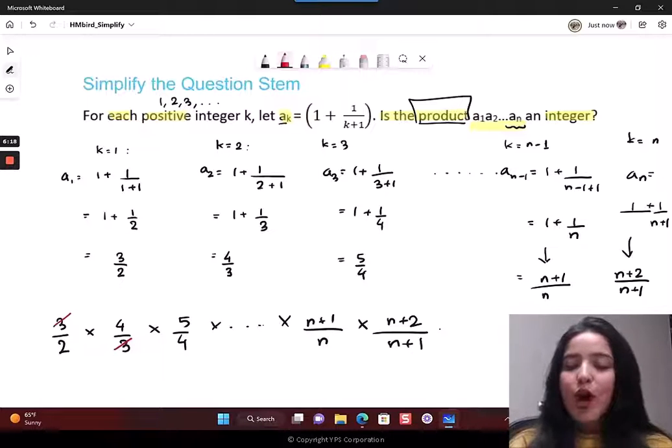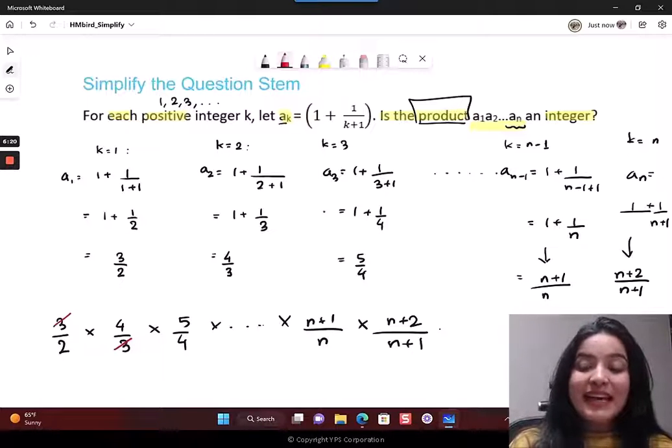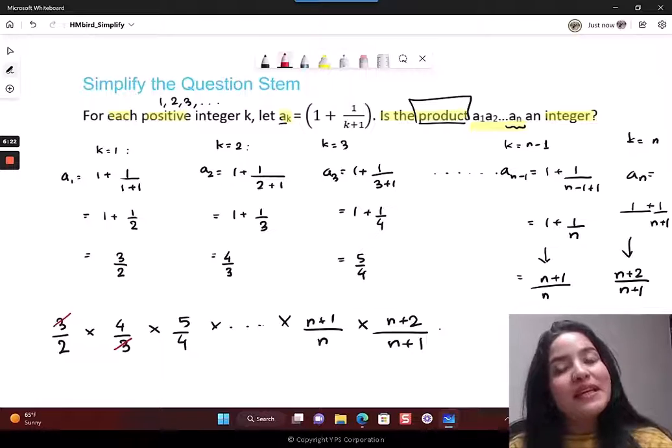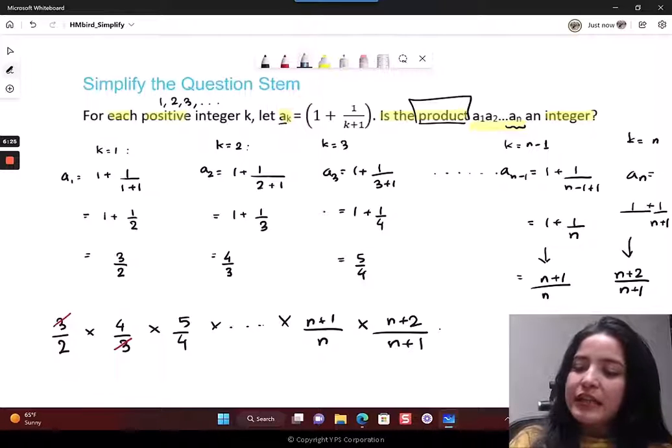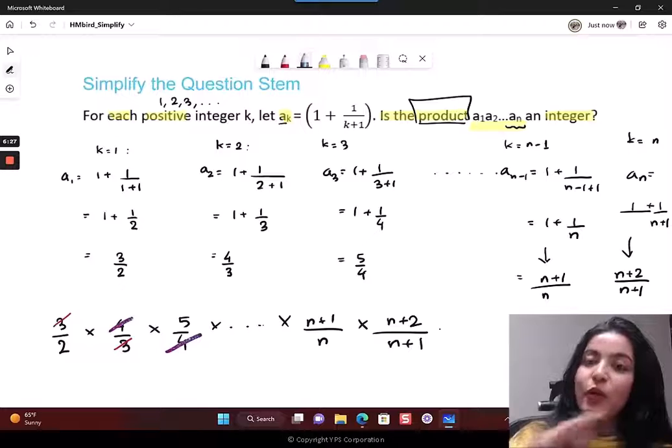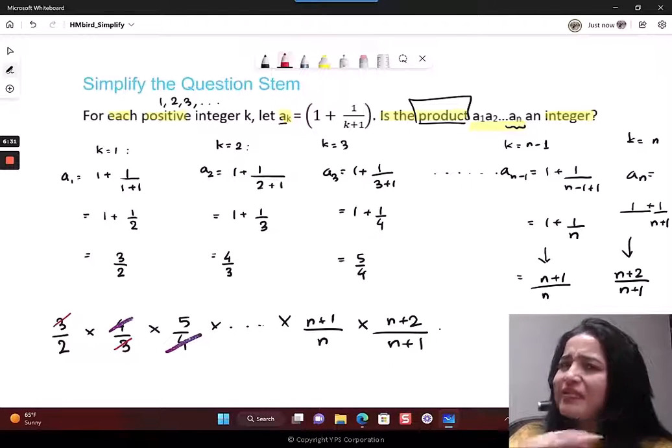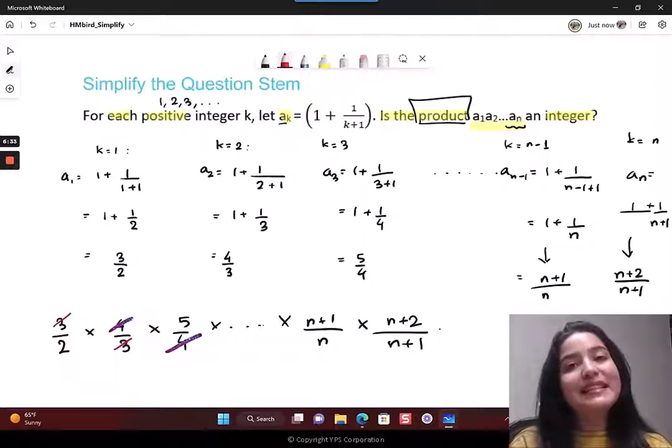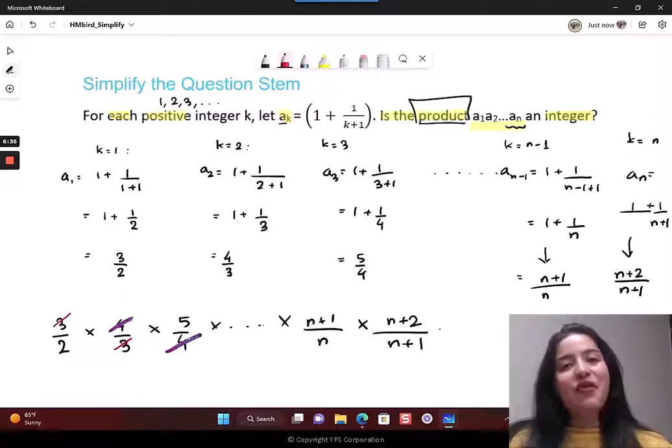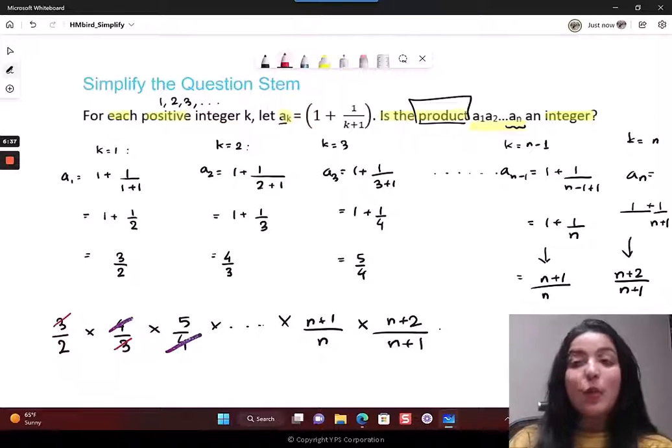Look very carefully. If you just observe, you'll find something that's going to make this super simple. You can cancel out the 3 from the first term with the 3 in the second one. One numerator cancels out the next denominator. Similarly, this 4 gets cancelled out with the next 4.